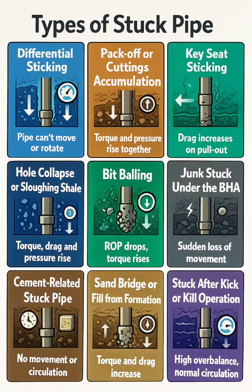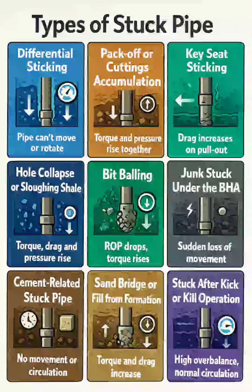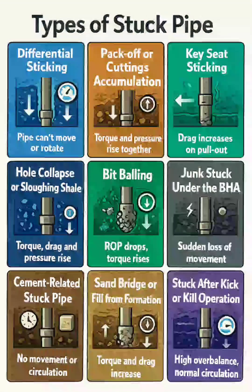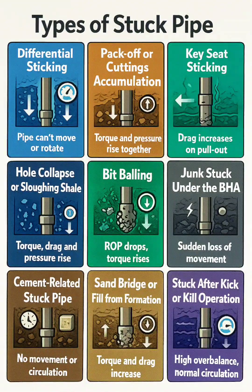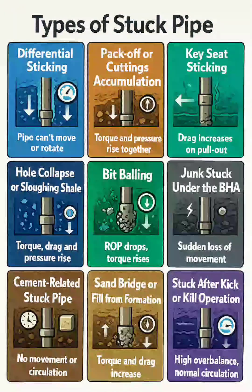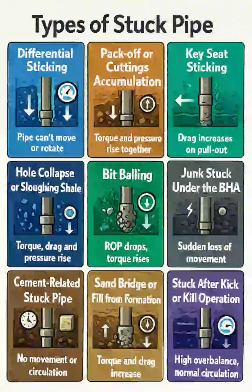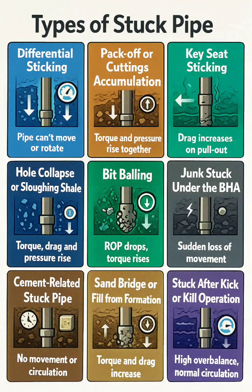Hole collapse or sloughing shale occurs when reactive shale falls or swells into the wellbore, trapping the pipe. Indicators include a gradual rise in torque and drag, restricted returns, increased pump pressure, and shale fragments in cuttings. Happens in reactive shales or after static periods.